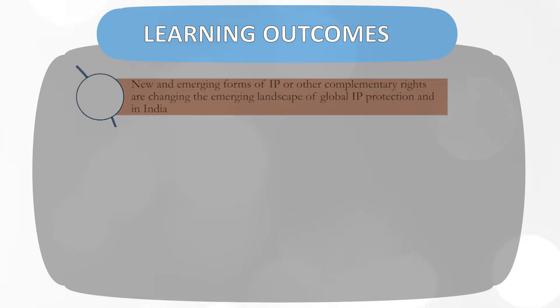Today we are going to discuss some of the remaining categories of Intellectual Property Rights which either have a legal or statutory basis in India's IP regime, or have been formulated through various judicial opinions, or are yet emerging or being demanded by viewers in relation to Intellectual Property. The learning objectives of this module are to understand how new and emerging forms of IP or other complementary rights are changing the emerging landscape of global IP protection and in India.